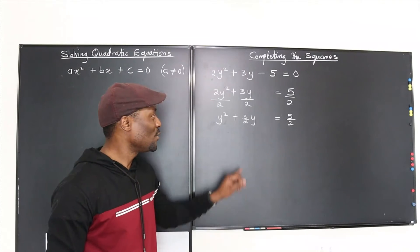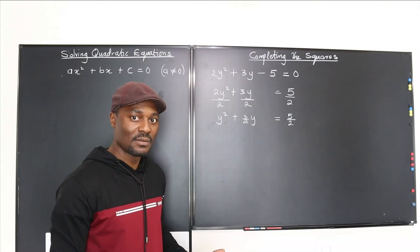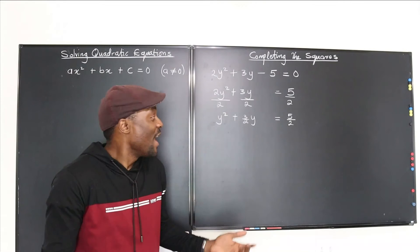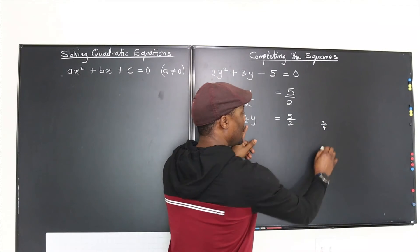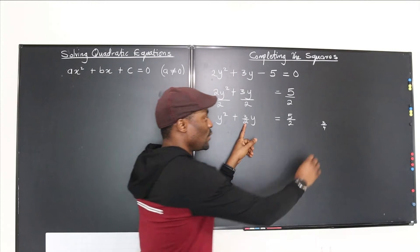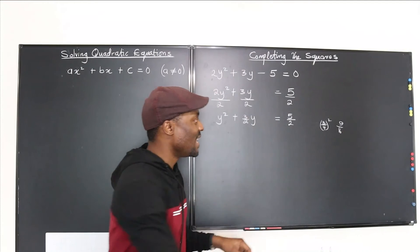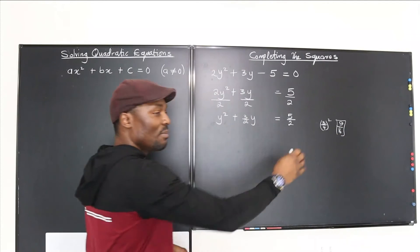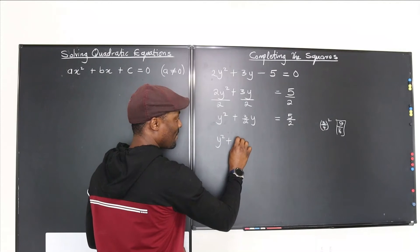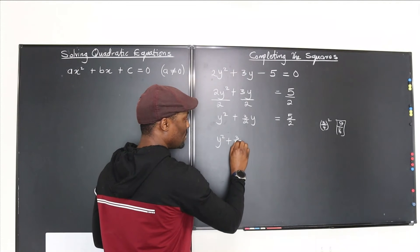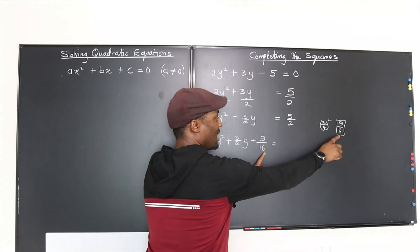After dividing by 2, we get y squared plus 3 over 2 times y equals 5 over 2. Now take half of 3 halves, which is 3 fourths. Squaring 3 fourths gives 9 over 16. Add 9 over 16 to both sides: y squared plus 3 over 2y plus 9 over 16 equals 5 over 2 plus 9 over 16.